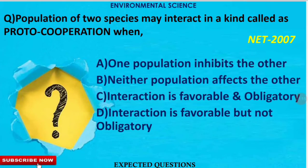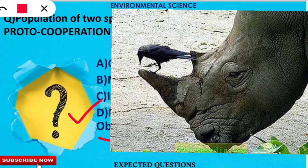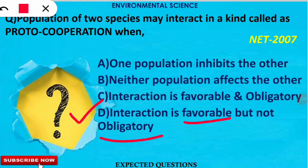The second question is about proto-cooperation. The correct option is option D. In proto-cooperation, the interaction is favorable for both species but it is not obligatory or compulsory. For example, a crow uses its beak to eat insects found on the body of a rhino, and the rhino gets cleaned as a result. However, it is not compulsory — this non-obligatory but mutually favorable interaction is called proto-cooperation.